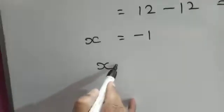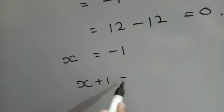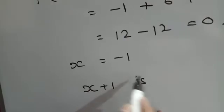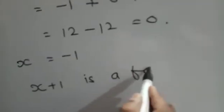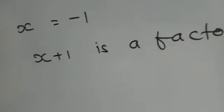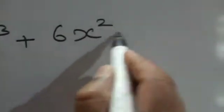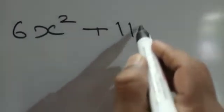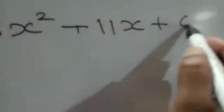Therefore, x + 1 is a factor of the given polynomial p(x). We have learned that a cubic polynomial can have three linear factors. We have found one linear factor. To find the remaining factors, we divide the given polynomial by the linear polynomial x + 1.